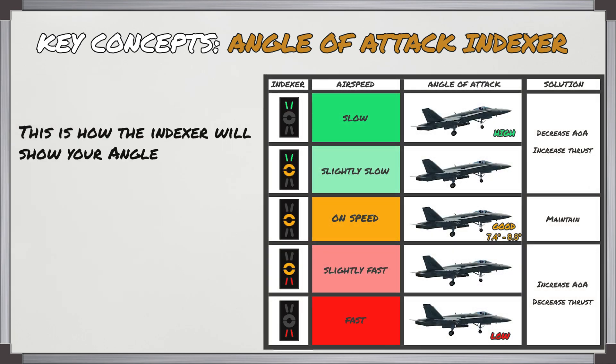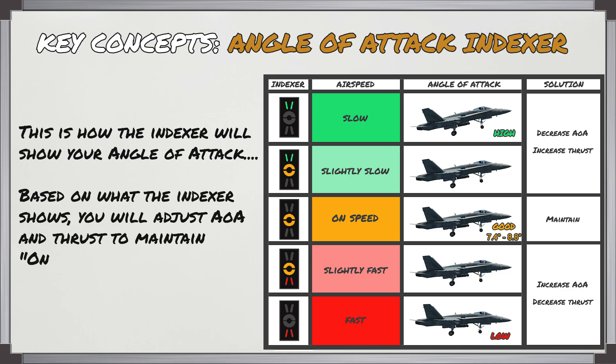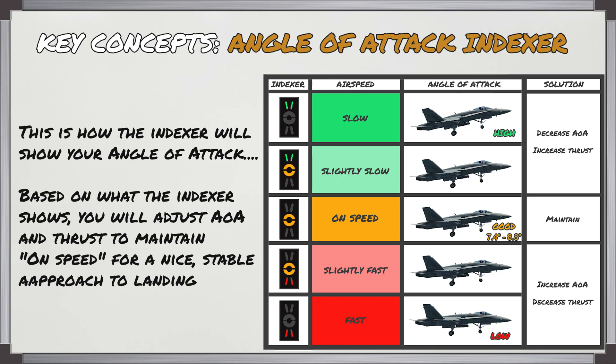This table shows you how the indexer will indicate the angle of attack, and based on what the indexer shows, you're going to be adjusting your angle of attack and thrust to maintain the on-speed condition for a nice stable approach to landing.